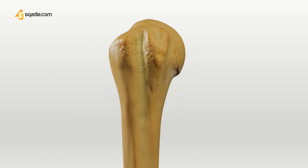The intertubercular sulcus consists of a lateral and a medial lip. The tendon of the pectoralis major muscle attaches on the lateral lip, also known as the crest of the greater tubercle, while the teres major tendon attaches on the medial lip. In addition, the tendon of latissimus dorsi attaches to the posterior aspect.